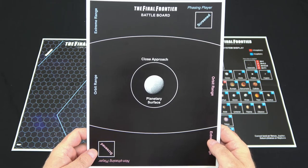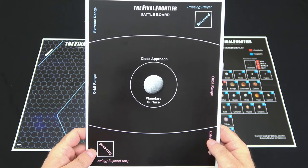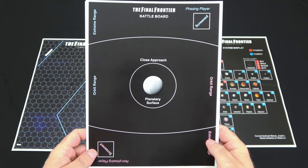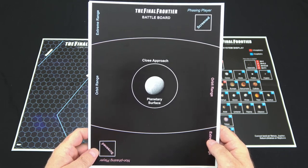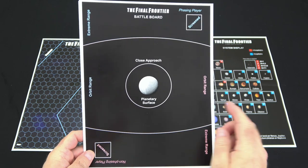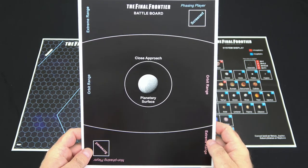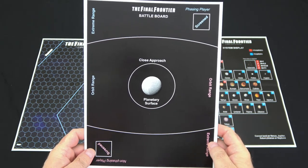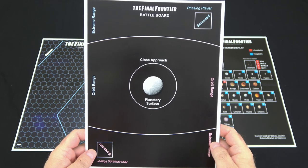Next, we'll take a look at the player aids that come with the game. The battle board is on the back of the cover sheet, and this is where you'll place your units when you're going to be doing space combat. You can see extreme range, orbital range, and then your close approach, and then the planetary surface, which is where you can switch over to using Solar Marine for the planetary combat if you'd like to link the two games together.